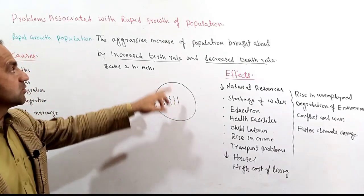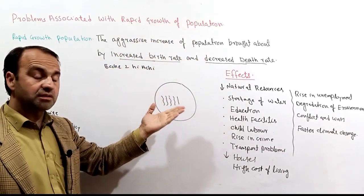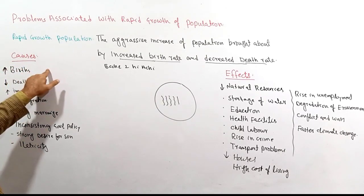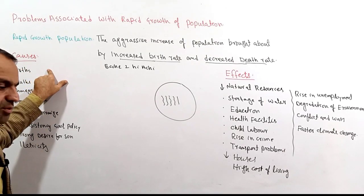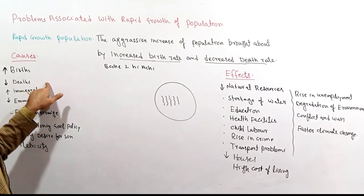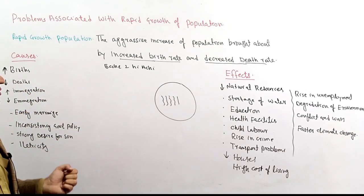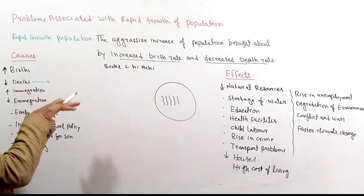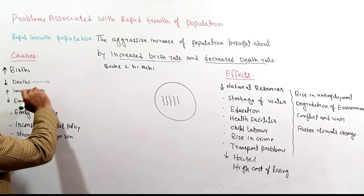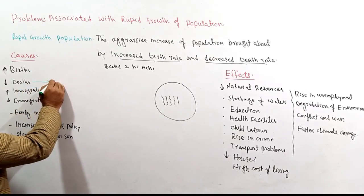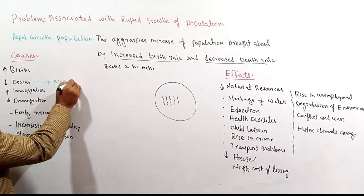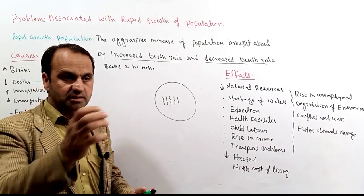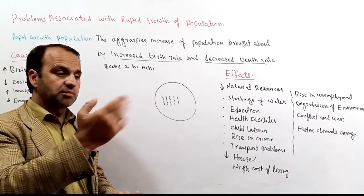A rapid population growth occurs when the birth rate increases significantly. The death rate also decreased due to advances in science and medicine, which brought about different changes in how diseases are treated.